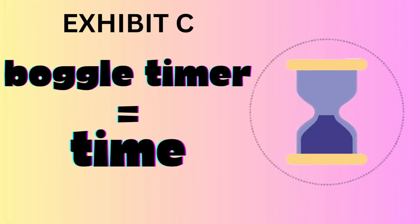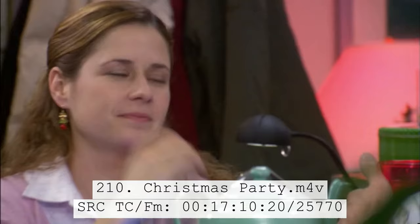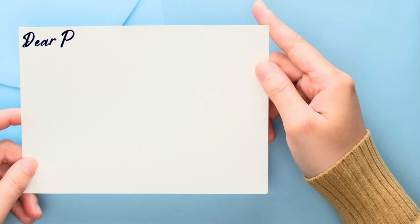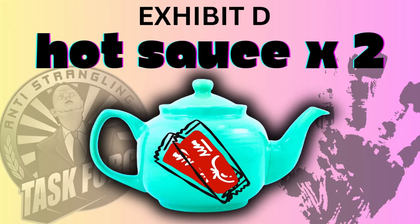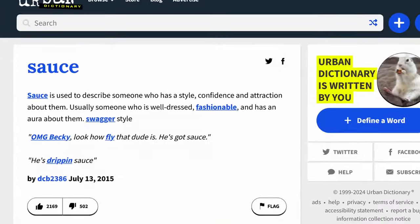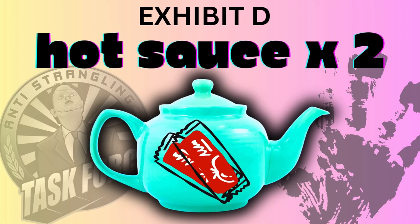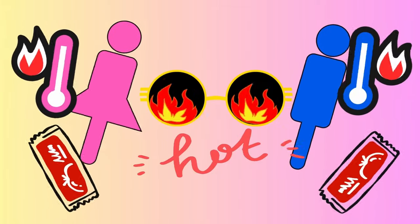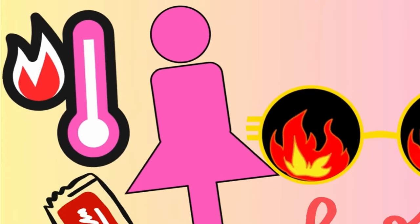Any link to the curse of 3 is a direction by the creators to pay attention to that clue. The boggle timer is symbolic of time — specifically the amount of time spent with Pam. Because as Jim spent so much time at reception talking to Pam, he's starting to get mixed-up feelings about his sexuality. So the card now reads: 'Dear Pam, I'm feeling mixed up. Ever since high school I knew I was gay. However I've been spending a lot of time with you.'